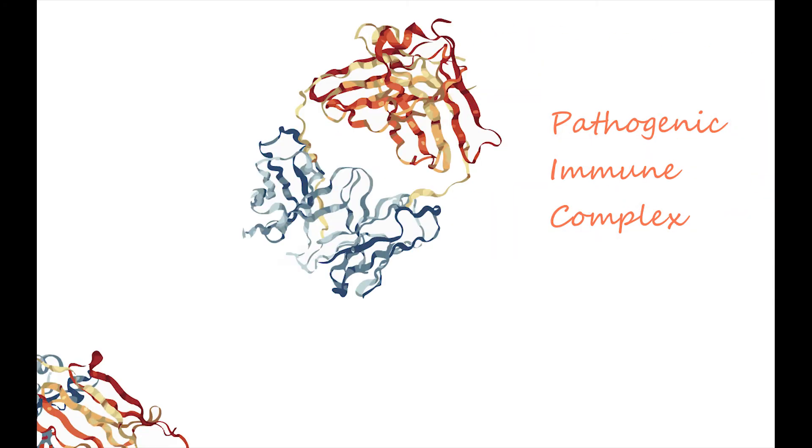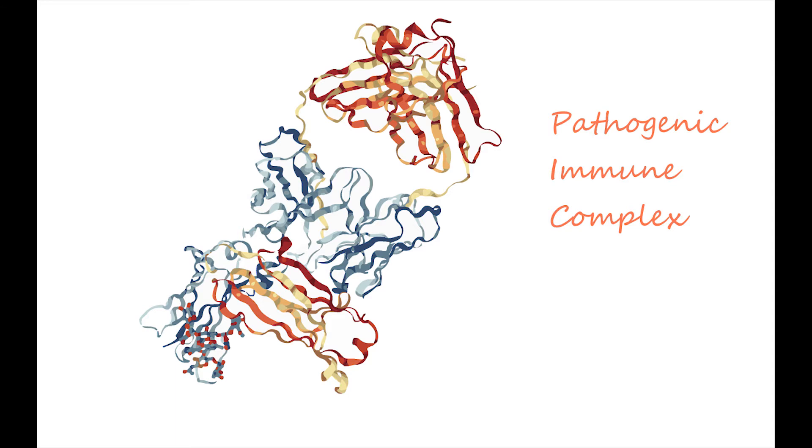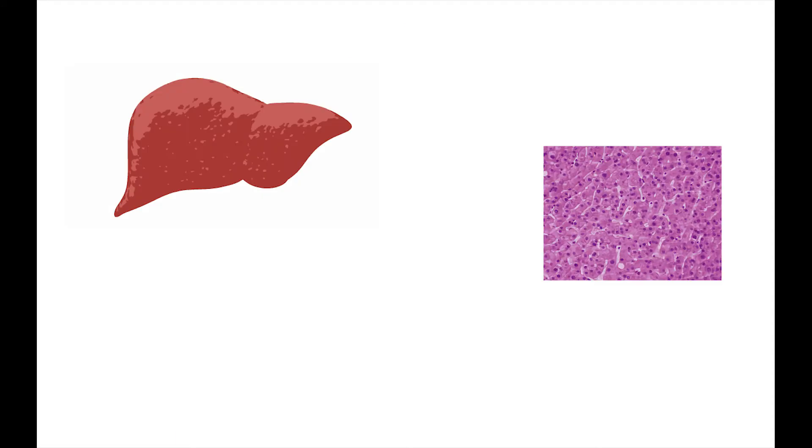The FC region of an antibody immunoglobulin G, IgG for short, when bound with RF, forms a pathogenic immune complex, which can subsequently cause damage to organs, tissue, and bones.